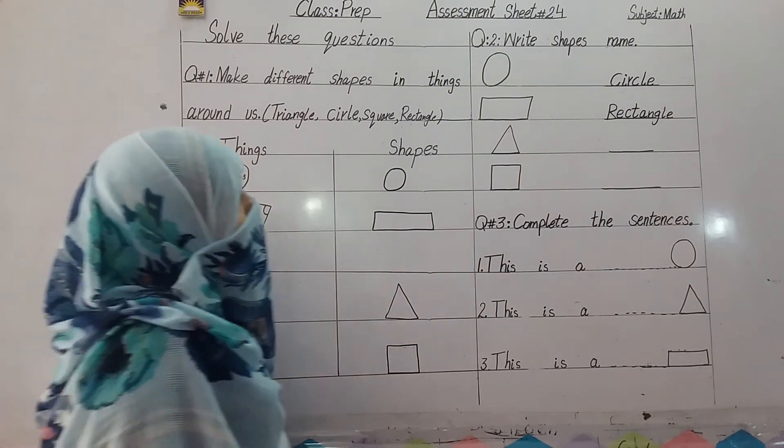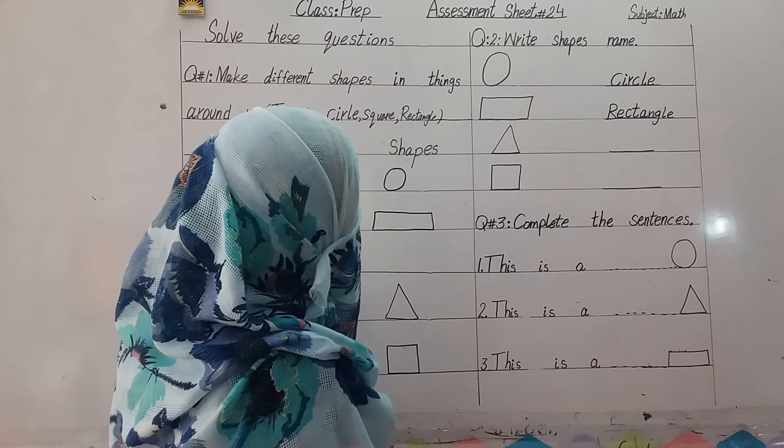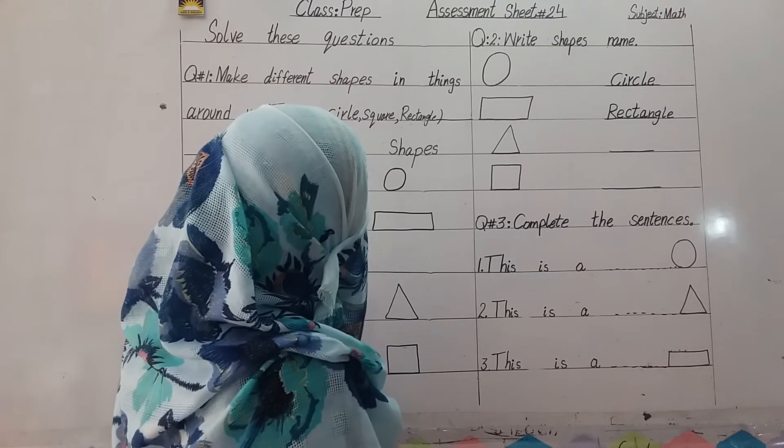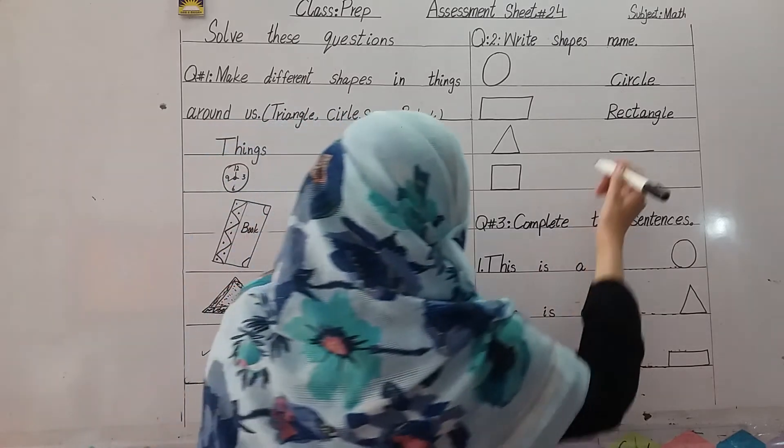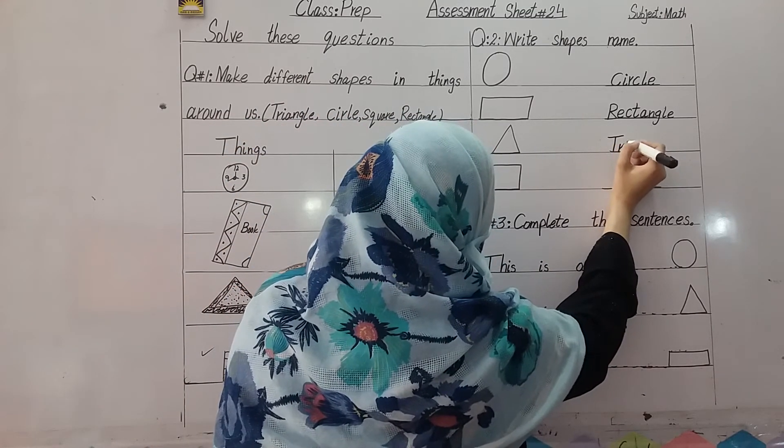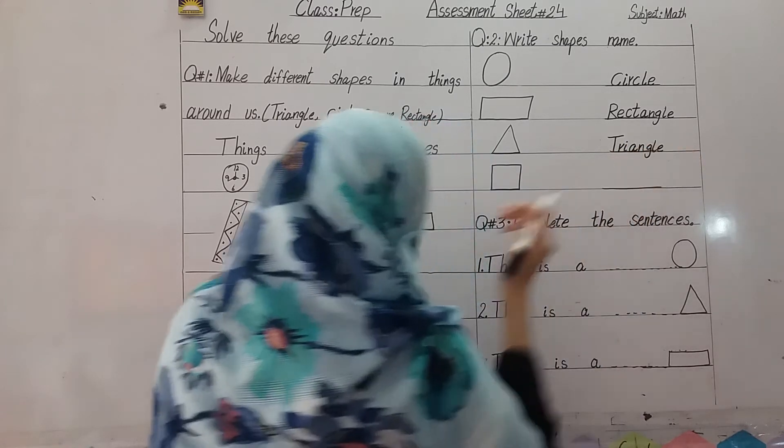Okay students, look at the board carefully and you can see the next one, which shape is. Yes, triangle. So, write here the spell of triangle. T, R, I, A, N, G, L, E. Triangle.